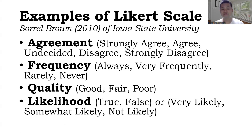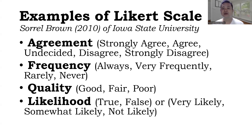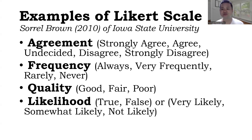For likelihood, we have either true or false — that is a 2-point Likert scale. Or we can also have a 4-point or 3-point Likert scale, like very likely for 3, somewhat likely for 2, not likely for 1. Again, these are just some examples of Likert scale. You can have different examples depending on the need of the researcher and depending on your need, if your research requires respondents to rank their answers.